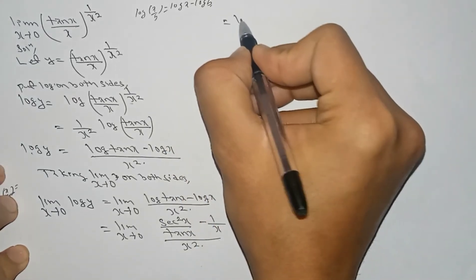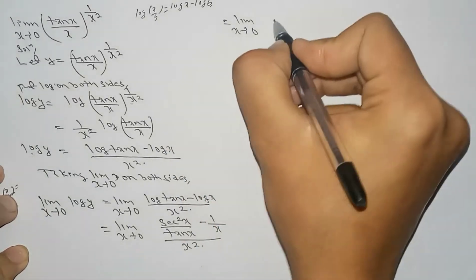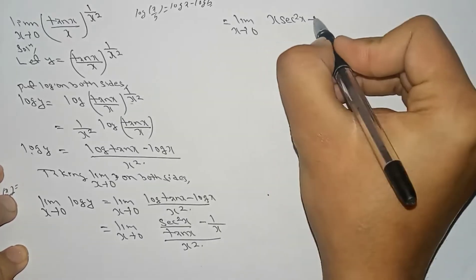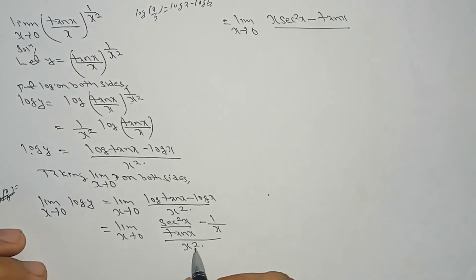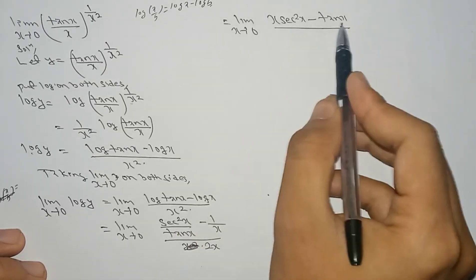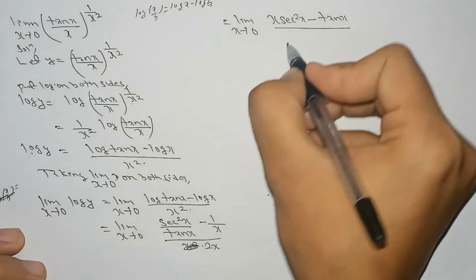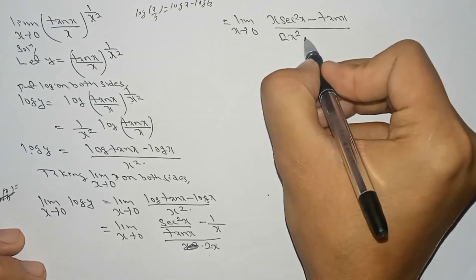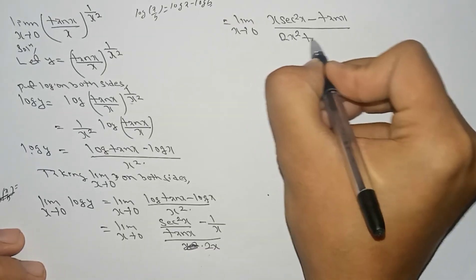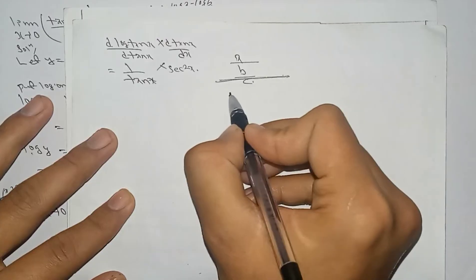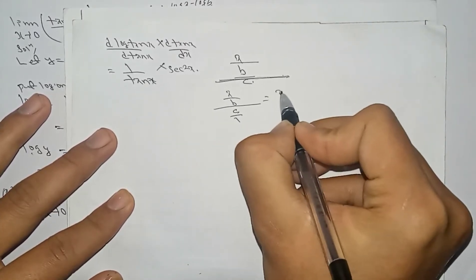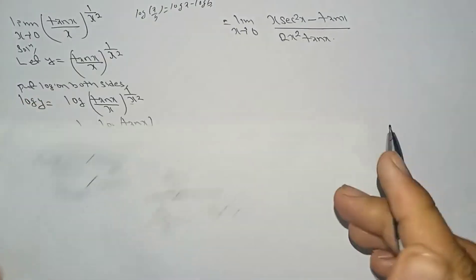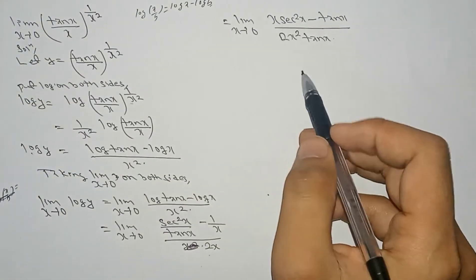So it is equal to limit x tends to 0 of (x·sec²x − tan x) / (x² · tan x · 2x). Simplifying: by the rule a/b divided by c/1 equals a/(b·c), we obtain the expression arranged as (x·sec²x − tan x) / (2x²·tan x).